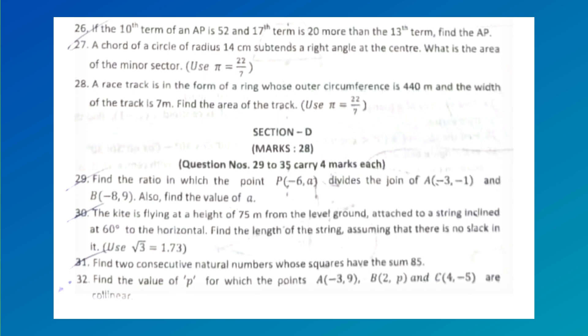Find the ratio in which point P(-6, a) divides the join of A(-3, -1) and B(-8, 9). Also find the value of a. A kite is flying at a height of 75 meters from the level ground, attached to a string inclined at 60° to the horizontal. Find the length of the string assuming that there is no slack in it (use √3 = 1.73).